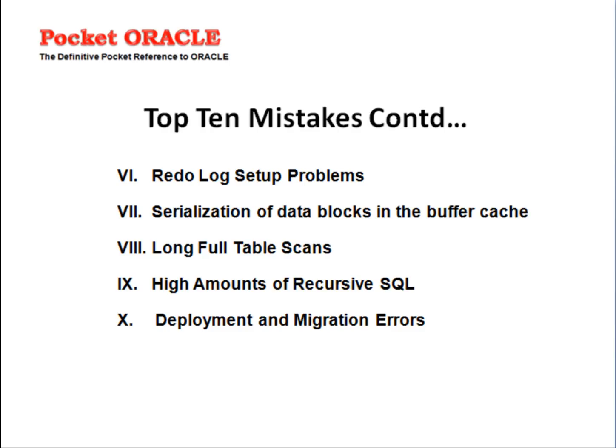Number 6: Redo log setup problems. Number 7: Serialization of data blocks in the buffer cache due to lack of free lists, free list groups, transaction slots, or shortage of rollback segments.